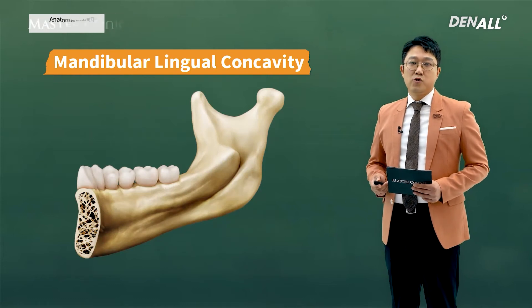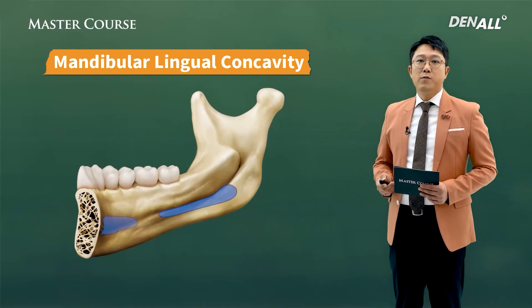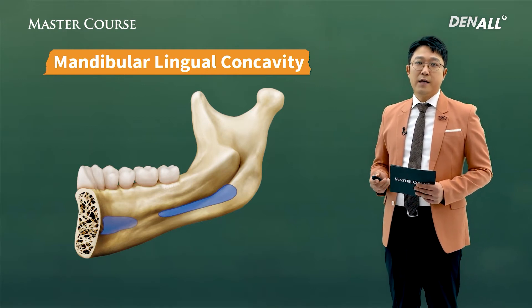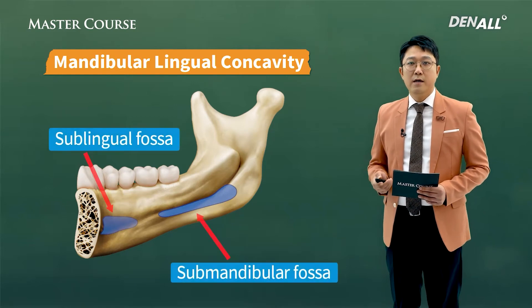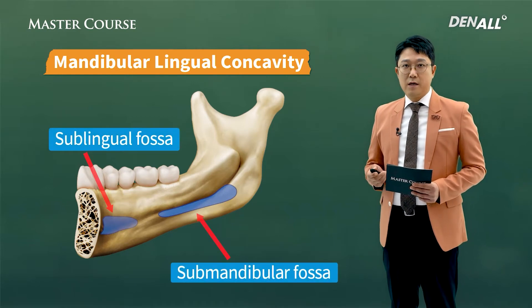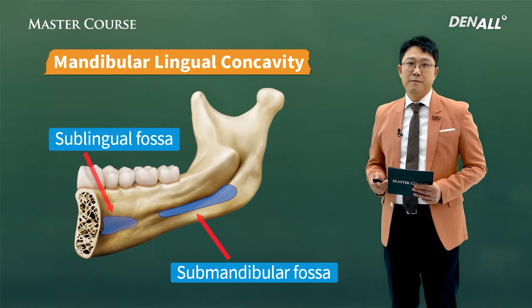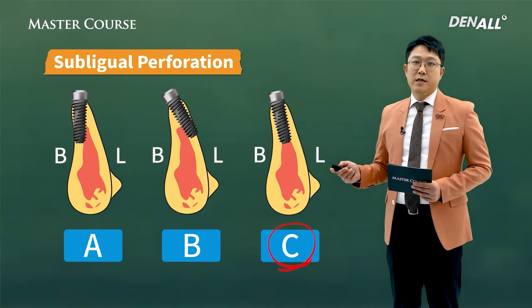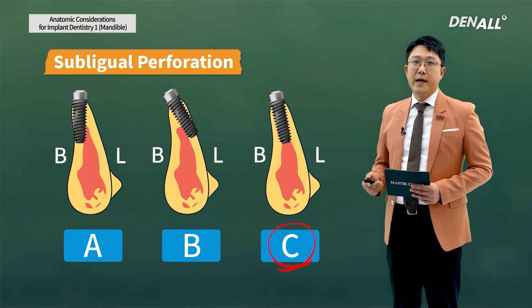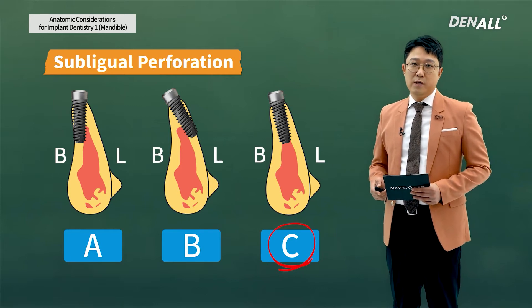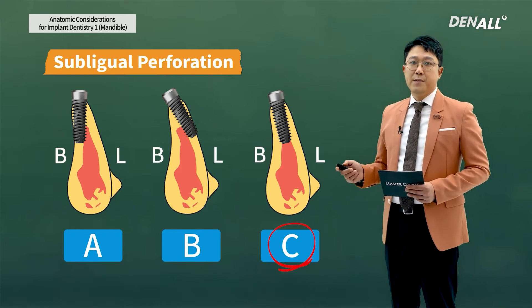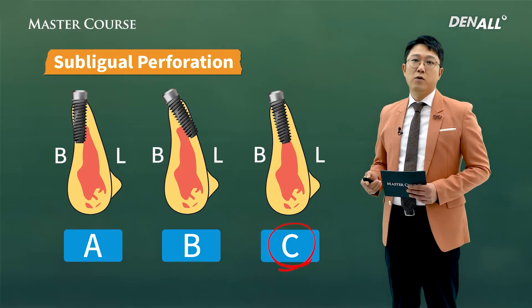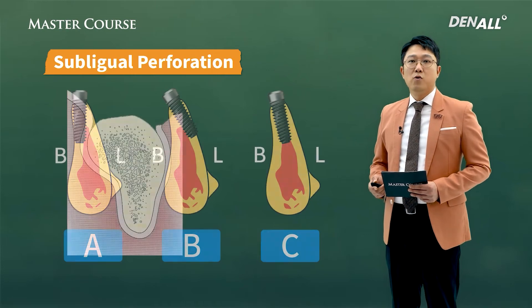Regarding the vessels, we need to be careful about the mandibular lingual concavity. In the lingual side of the mandible, as discussed before, the submandibular gland and sublingual gland run in this fossa. Implant is placed very well in position C. However, if they are placed in A or B - in the case of B, it is too buccally inclined - then perforation can occur on the lingual side.